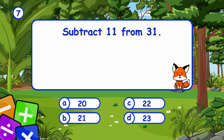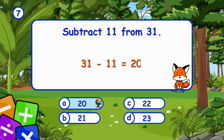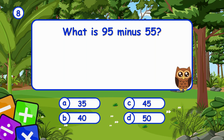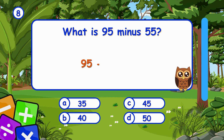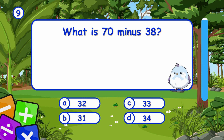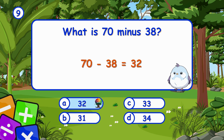Subtract 11 from 31. It's A, 20. Subtracting 11 from 31 leaves 20. What is 95 minus 55? It's B, 40. 95 minus 55 equals 40. What is 70 minus 38? It's A, 32. 70 minus 38 equals 32.